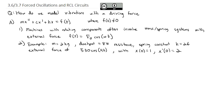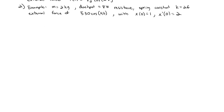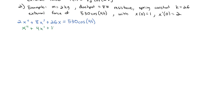There are lots of pieces here. We take the mass times the second derivative plus the dashpot's resistance times the first derivative plus the spring constant times x equals the driving force 530 cosine of 4t. This gives a linear differential equation with constant coefficients requiring the method of undetermined coefficients for the particular solution. Dividing by 2: x'' + 4x' + 13x = 265 cosine of 4t.